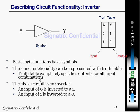A truth table completely specifies the output for all input combinations. This is the input column and this is the output column — for each input combination you get a corresponding output. The above circuit is an inverter: an input of 0 is inverted to 1, and an input of 1 is inverted to 0.